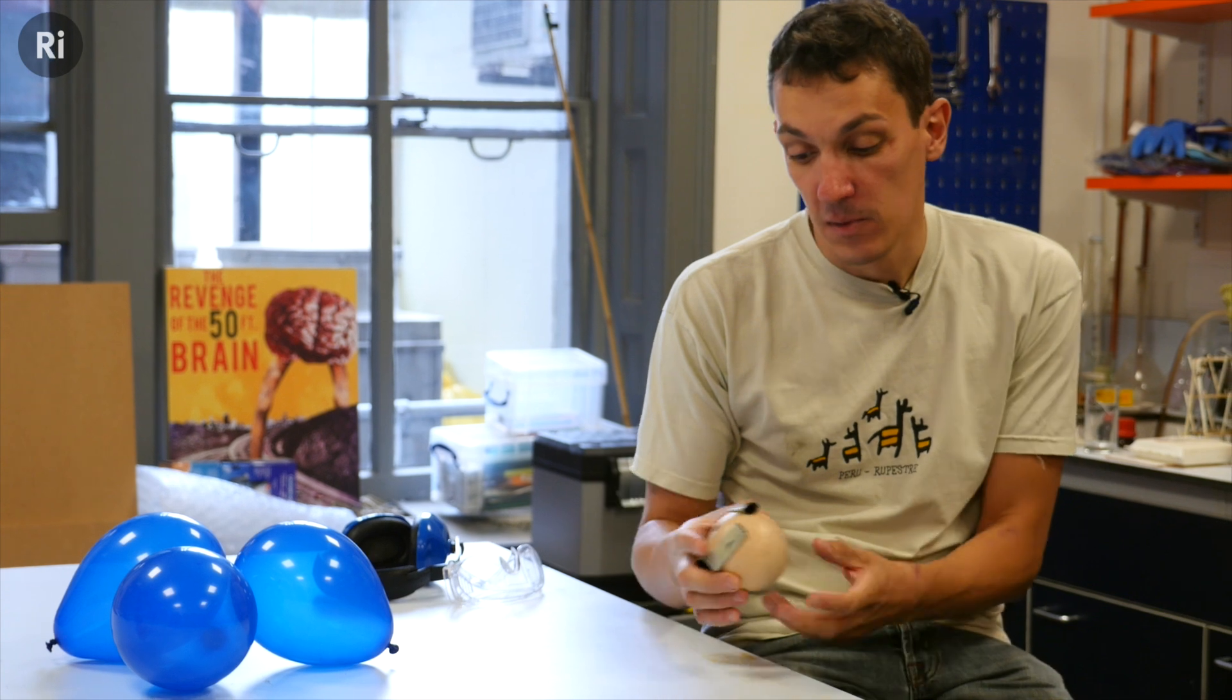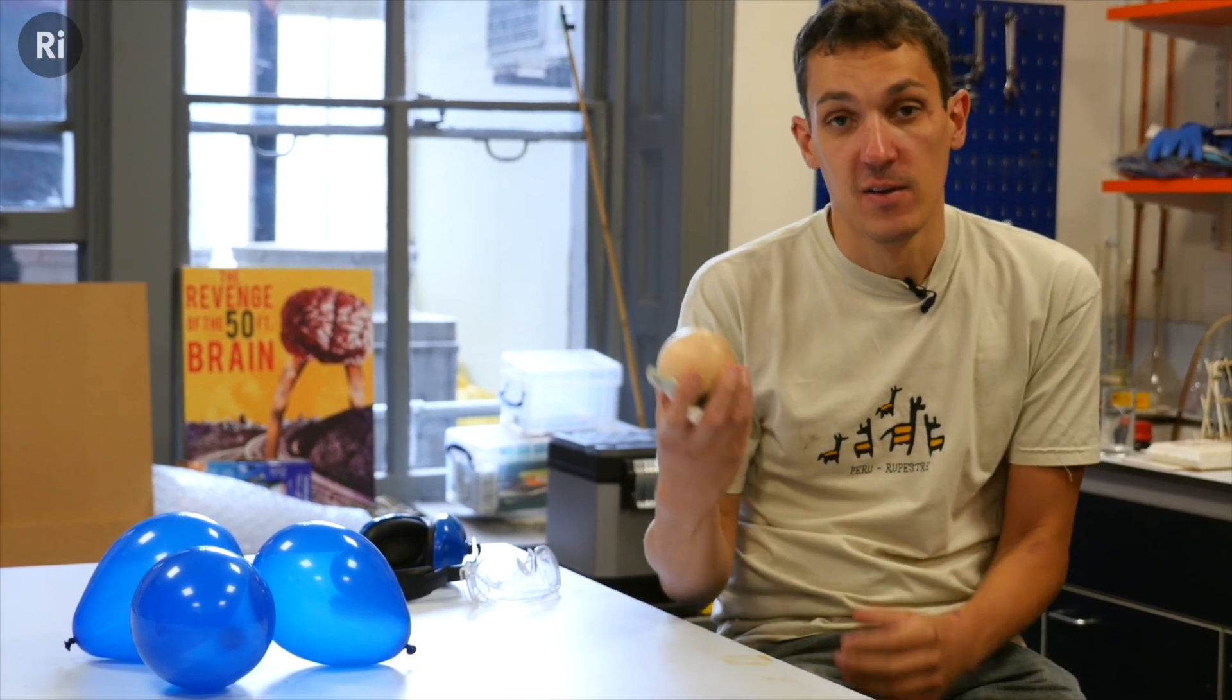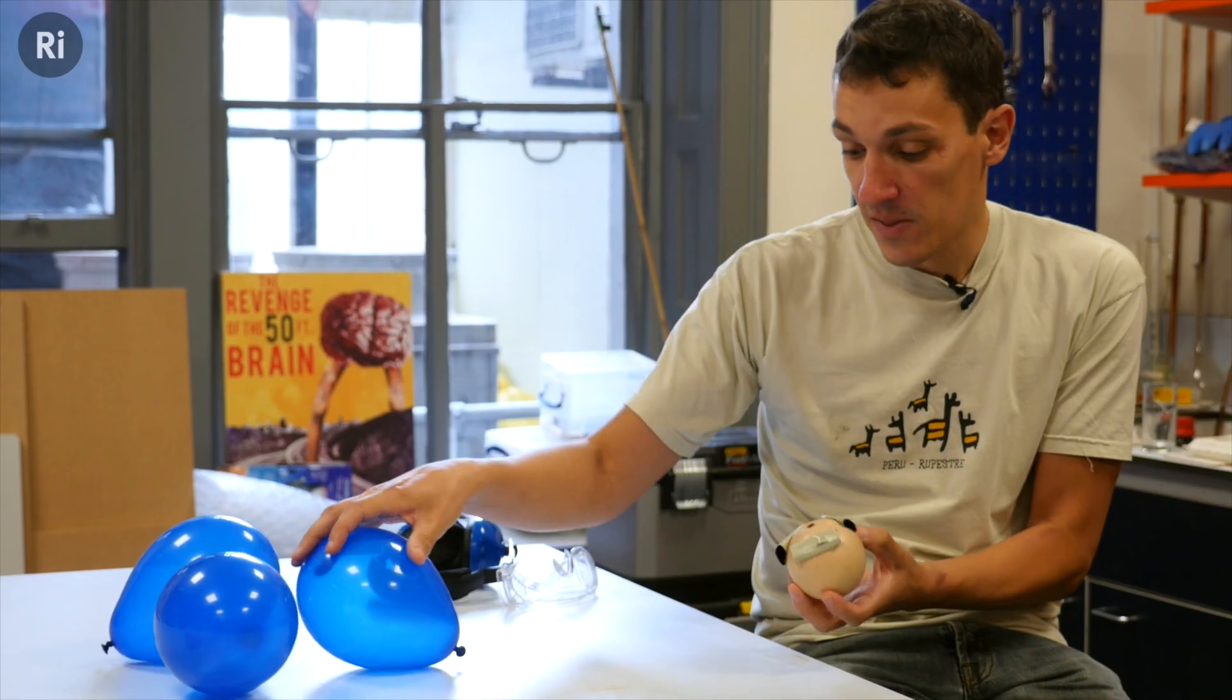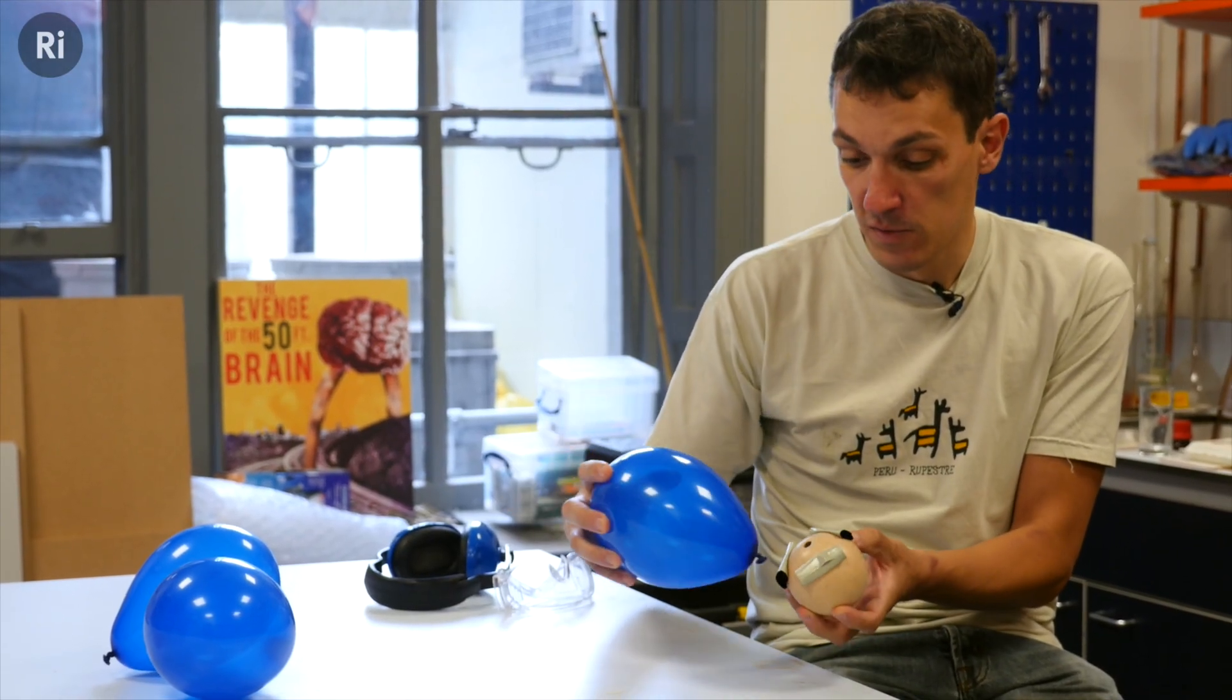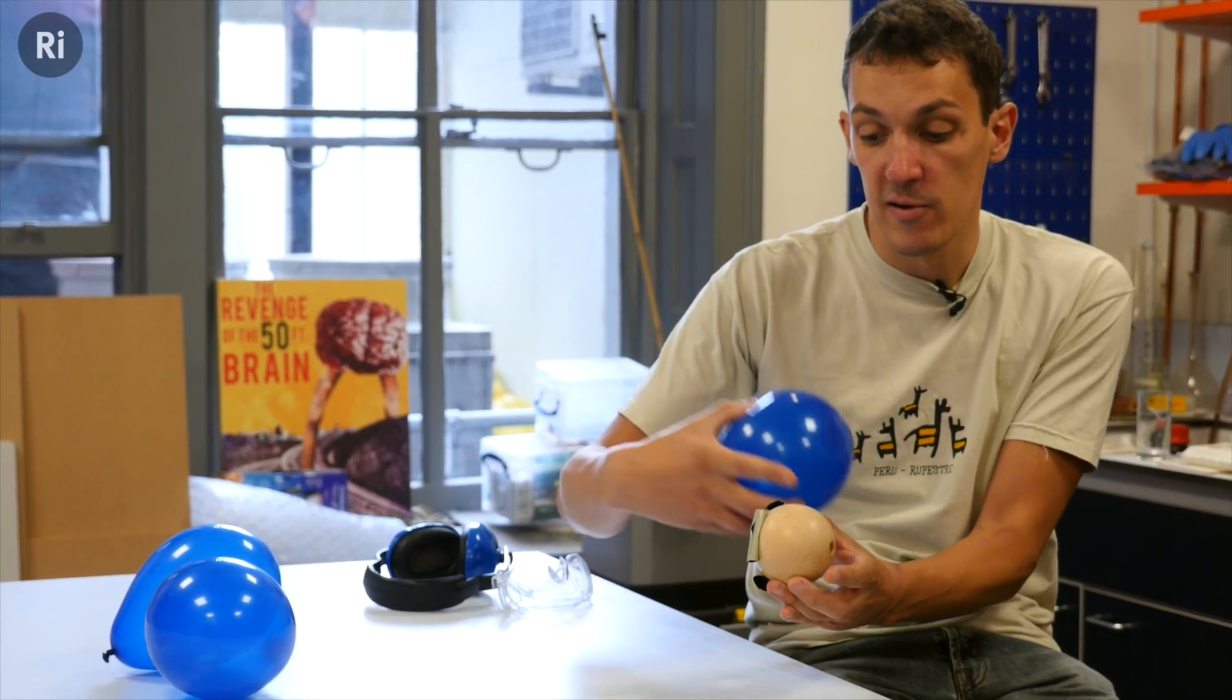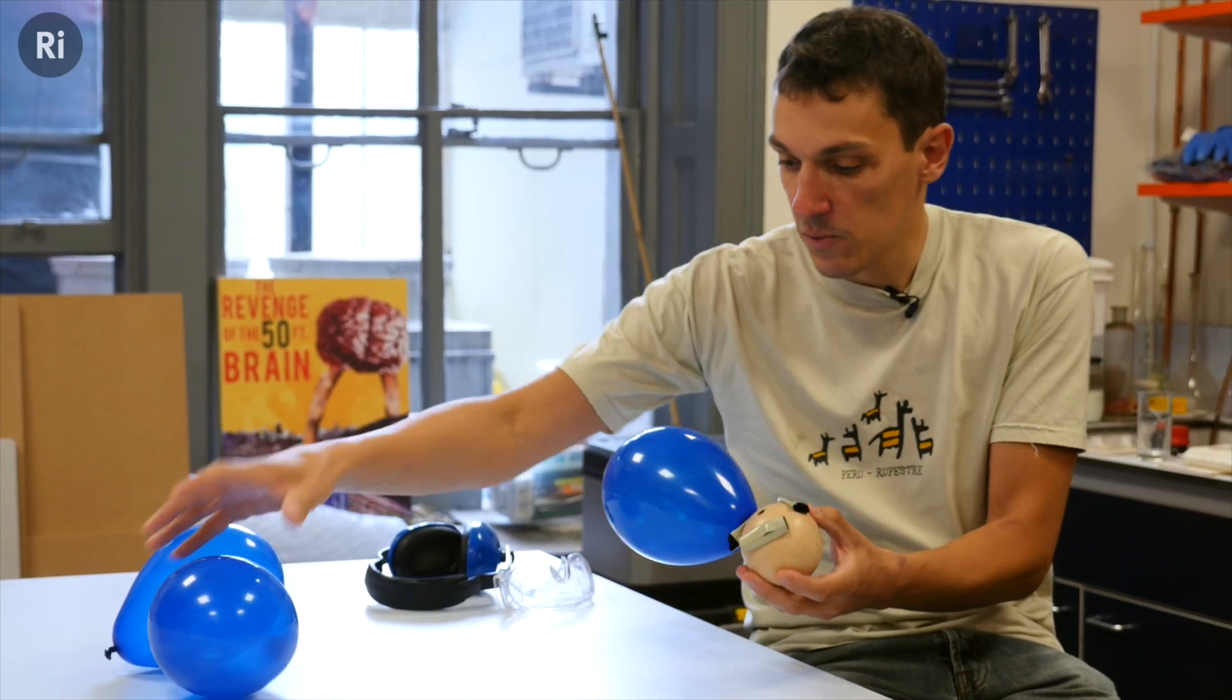Now the reason this compound is so unstable is all down to how it's put together. It's nitrogen triiodide, so we have a nitrogen atom, and this is a trivalent atom. That means it likes to form three bonds with other atoms. So when we bring it together with iodine, it forms bonds with three iodine molecules, and they all go on this side of the nitrogen atom because of the way the nitrogen's electrons are arranged.